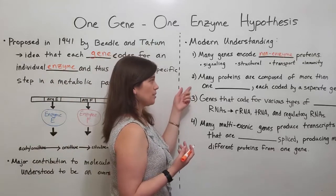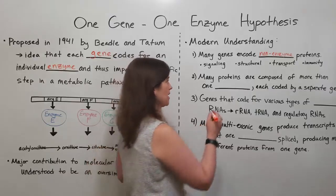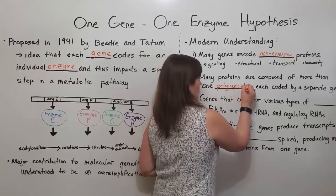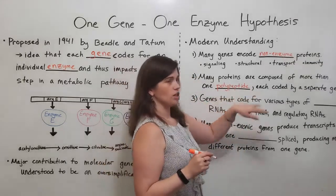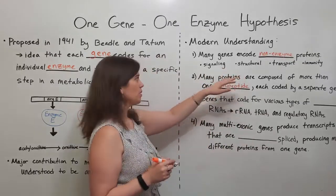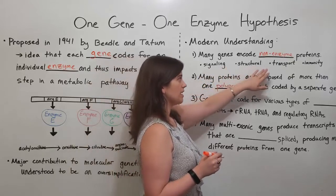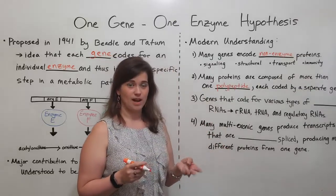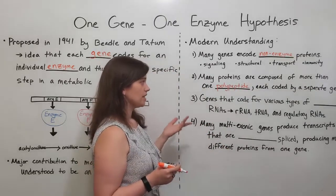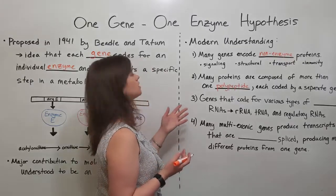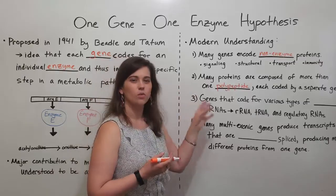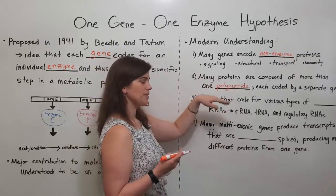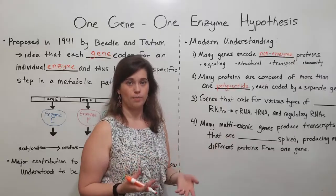Another major exception is that many proteins are actually composed of more than one polypeptide, and each of these polypeptides is coded by a separate gene. In fact, all of the proteins mentioned — insulin, keratin, hemoglobin, and antibodies — are composed of at least two polypeptides, if not three or four, each coded by a separate gene. This gives us a different way of looking at the original hypothesis, knowing that each gene codes for a different polypeptide, but the final proteins contain components coded for by many genes.